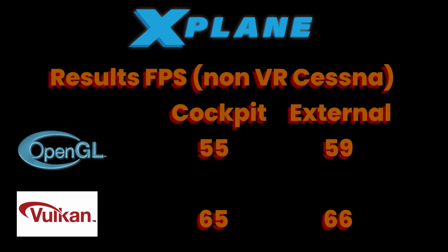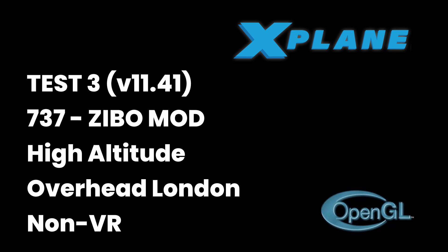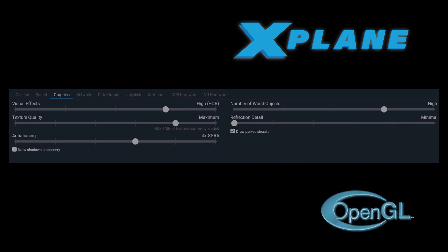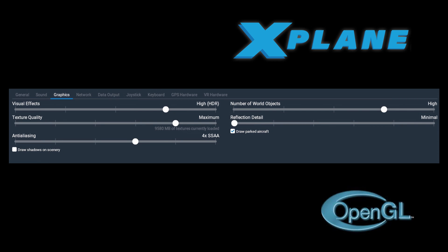OpenGL cockpit 55 and external 59. Vulkan was certainly faster at 65 and 66. On to our next test. We're back with version 11.41 and a more complex aircraft, the Zibo 737.